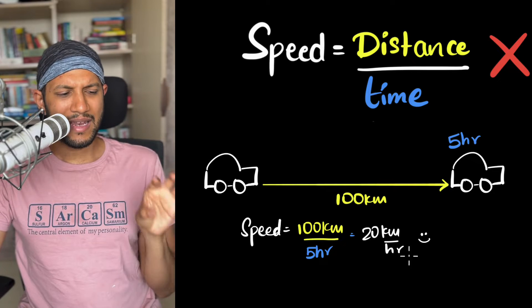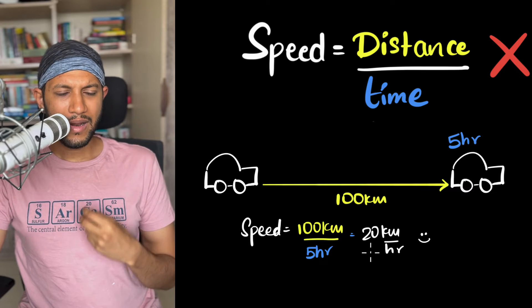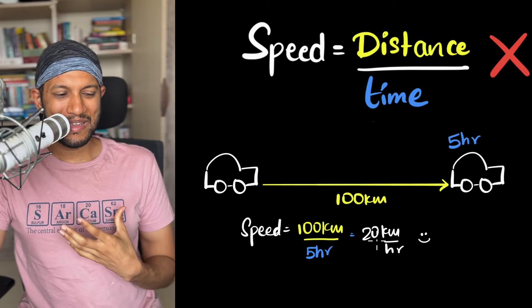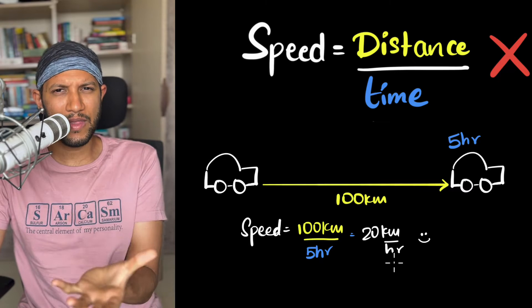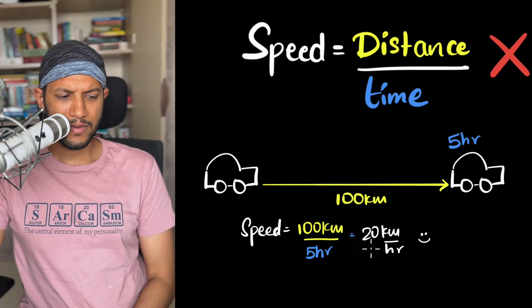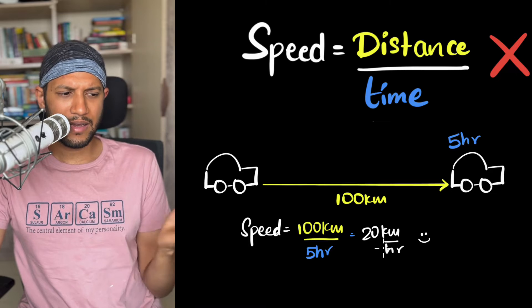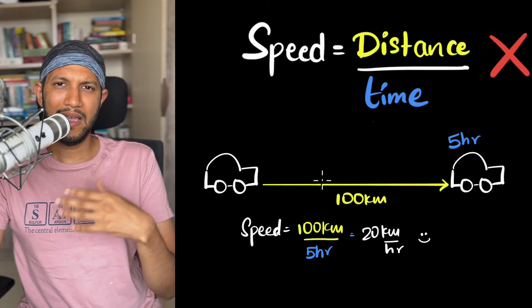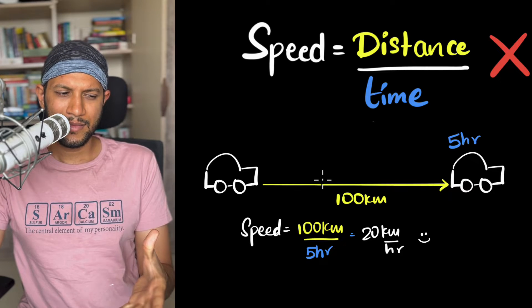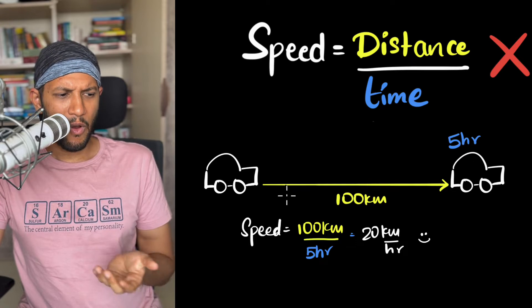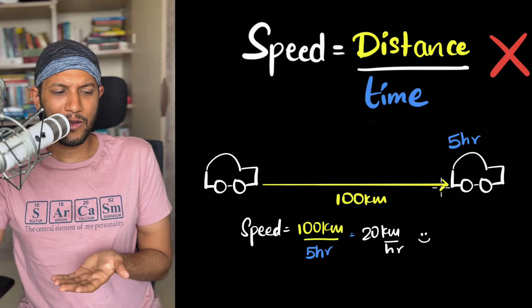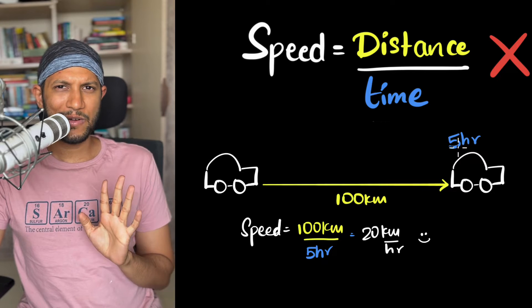But let's come back to this problem and ask this question: What does it mean to say that the speed is 20 kilometers per hour? What does that number represent? You may say, well, 20 kilometers per hour means that the car travels 20 kilometers every hour. But do we know that the car is doing that? I mean, all we know is that the car traveled 100 kilometers in five hours.